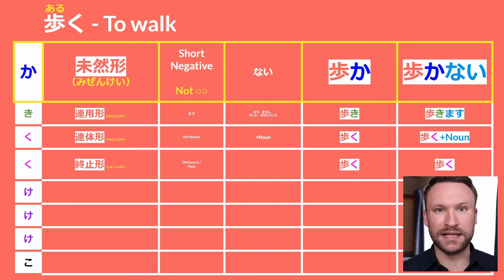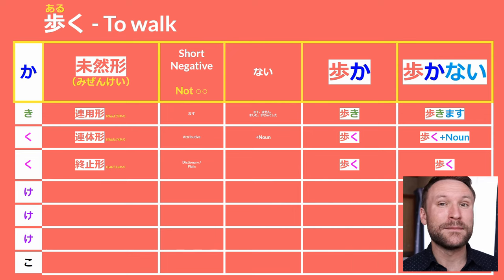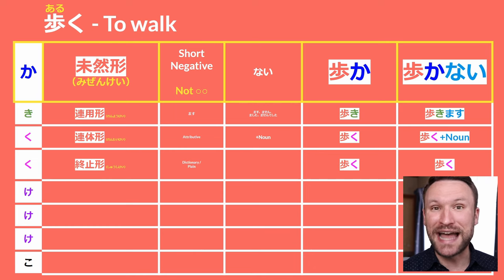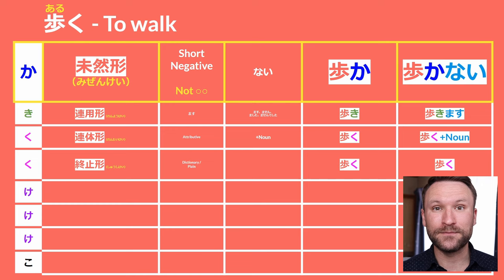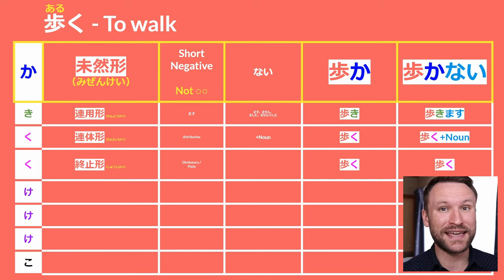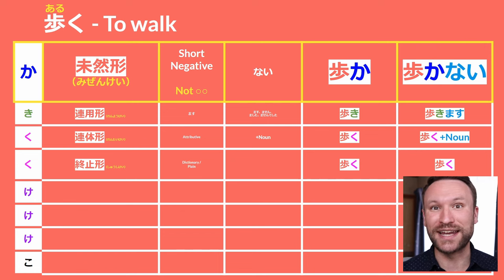Next, we move up to the A column. We get aruka. This is mizenke, the short negative form. To get it, all you need to do is add nai to the end: arukanai — 'not walk.' This never changes. You add nai to the end of the mizenke and you always have the short negative conjugation.